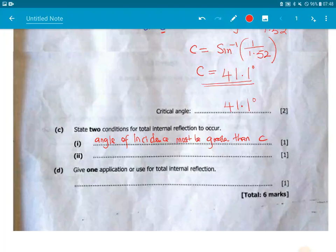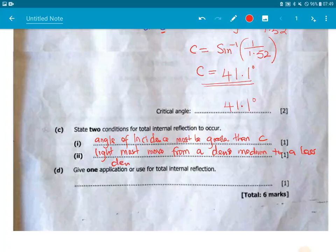So the angle of incidence must be greater than the critical angle. Are we together? Number two is that light must move from a medium which is more dense, or must move from a dense medium to a less dense medium.